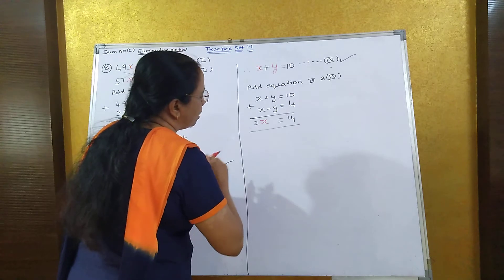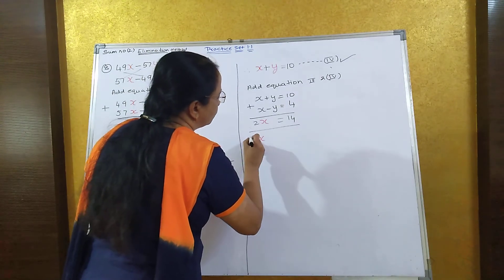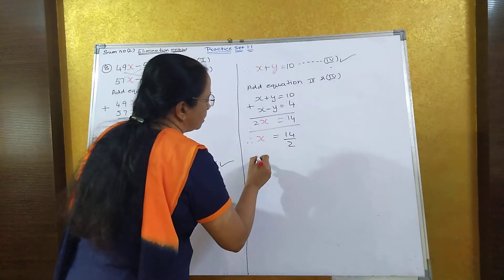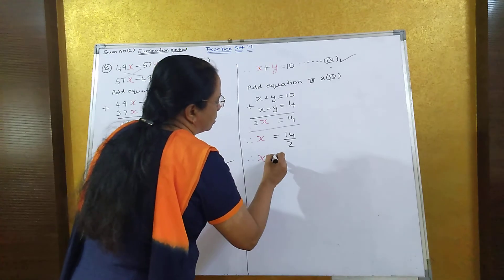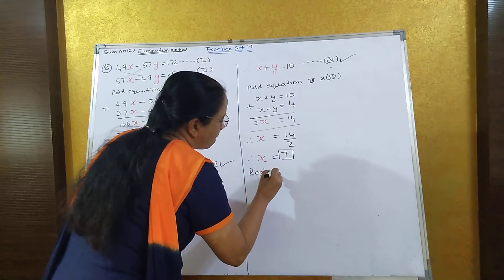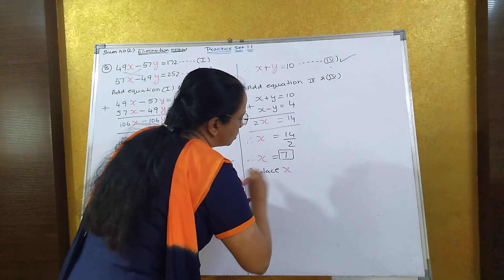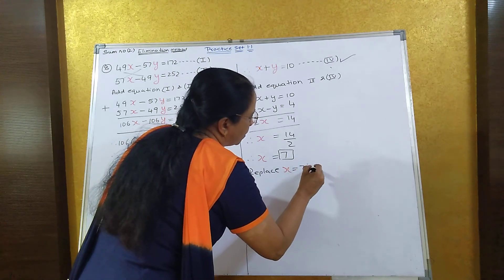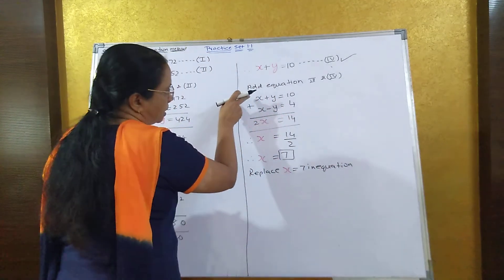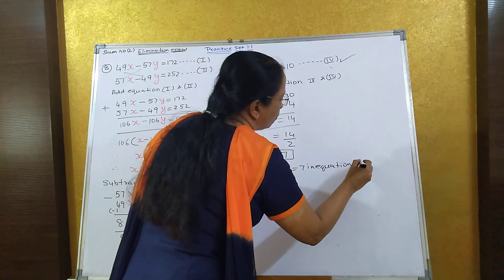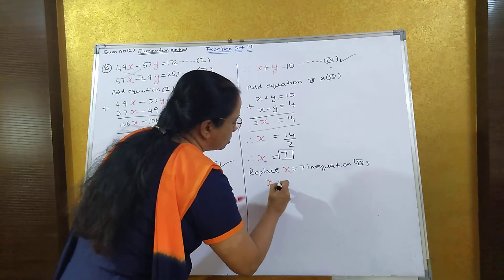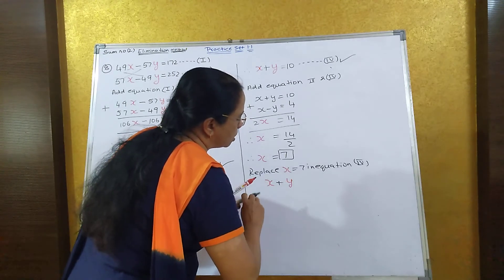Take the 2 to the other side. x is equal to 14 upon 2. When you divide 14 by 2, x is equal to 7. So we have got the value of x. Now replace x equal to 7. Always take the easier equation — that is equation 4: x plus y is equal to 10.